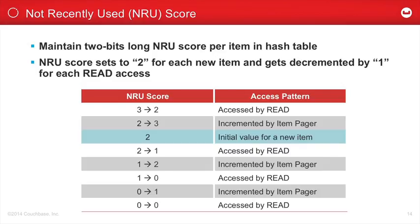The question is: when is the NLU value incremented? There is an item pager that I'll explain on the next slide. The item pager visits each hash table item and increments the NLU value by 1. This creates a race between read operations from clients, which decrement the NLU score, and the item pager, which increments it. If a given set of items is heavily accessed by the application, we observe that their NLU score most likely remains between 0 and 1.